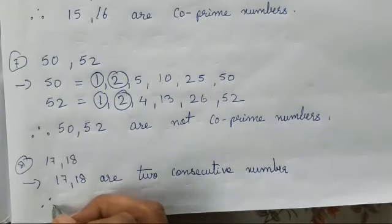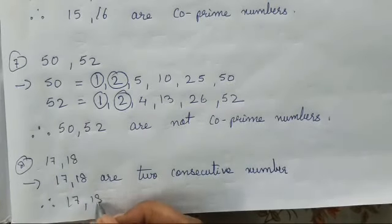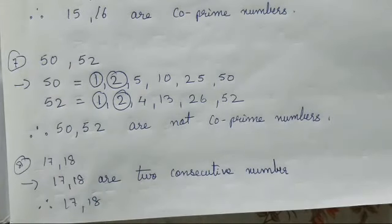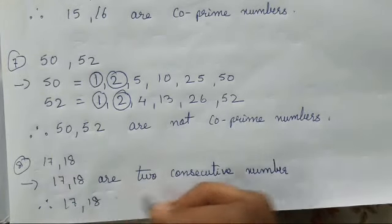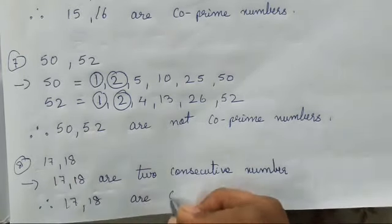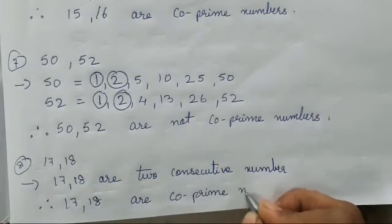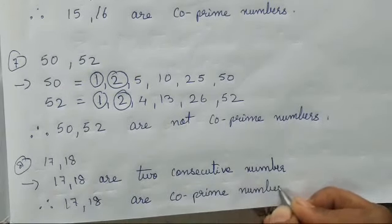Therefore, 17 and 18. If you find the factors also, children, then only one is going to be, only one factor is going to be common. That is 1. So, therefore, 17 and 18 are co-prime numbers.